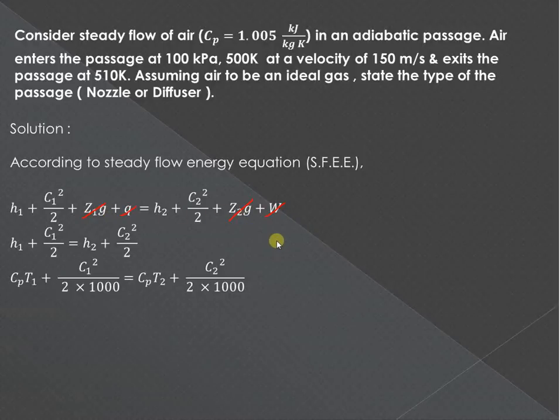Neglecting this datum head, heat supplied, and work done, we will get the simplified form of this equation: h1 plus C1 squared by 2 is equal to h2 plus C2 squared by 2.